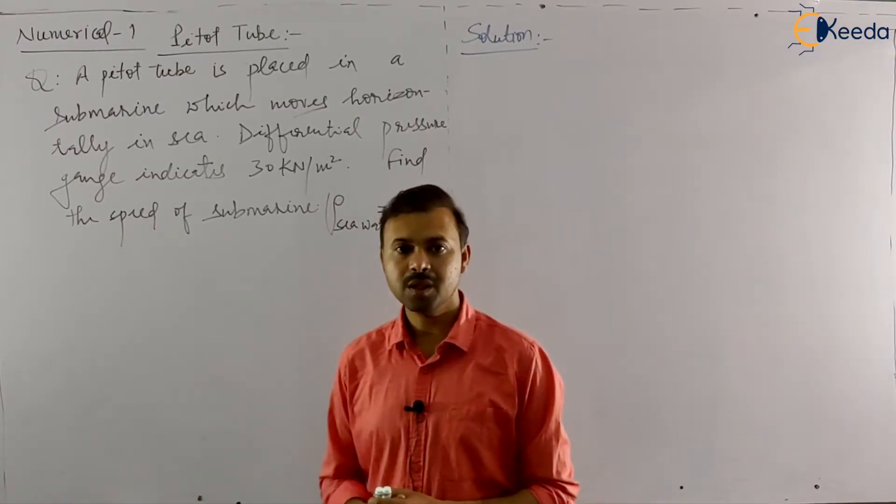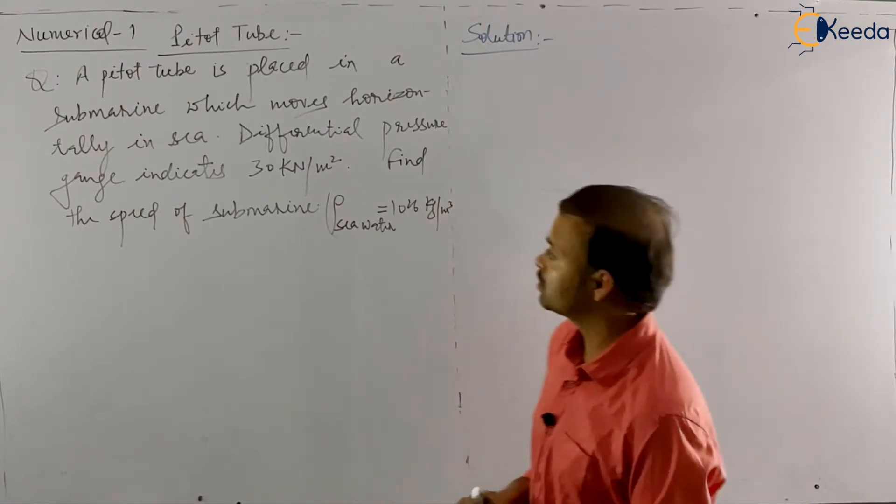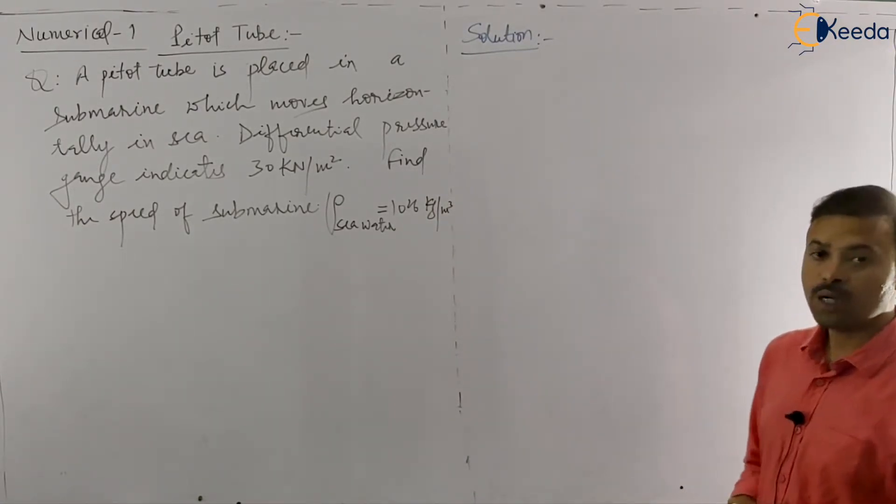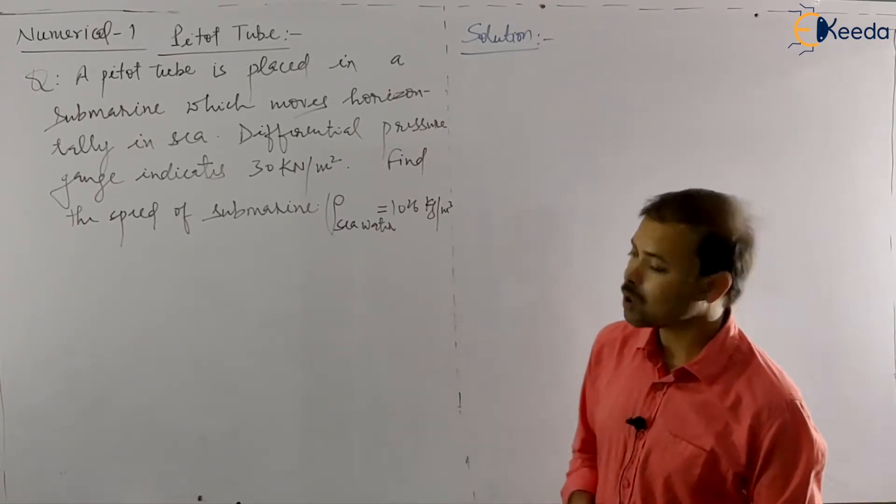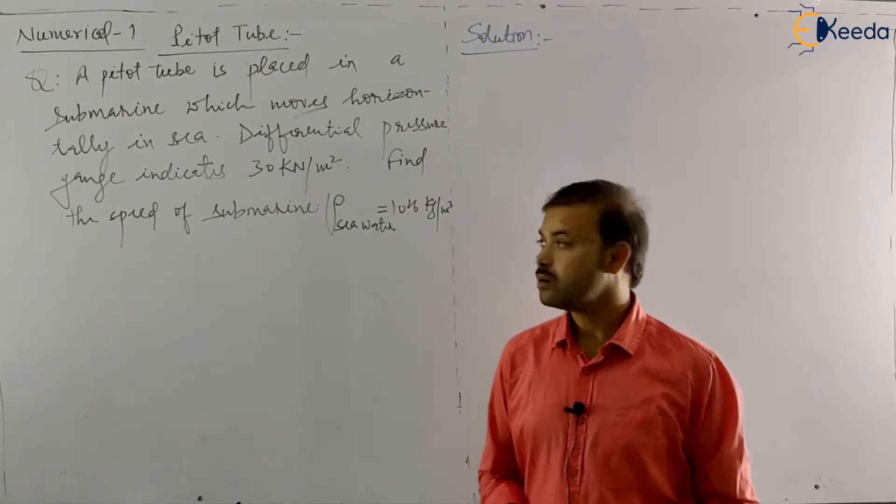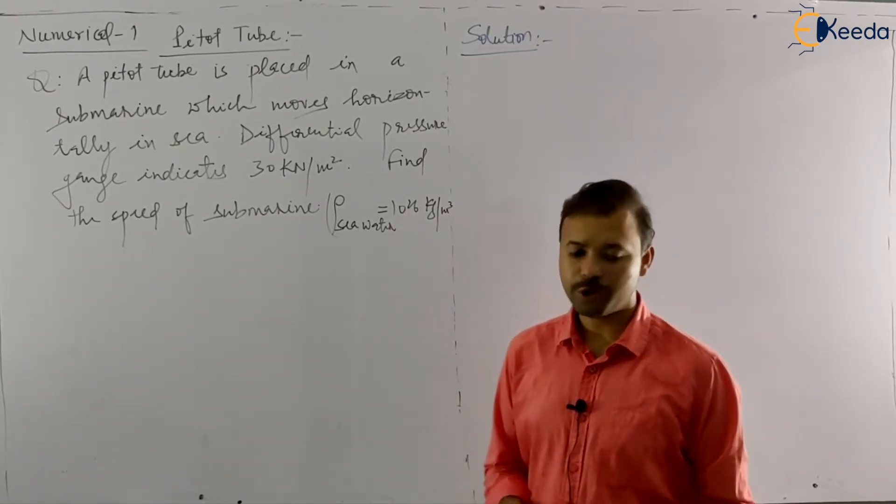You have to find the speed of the submarine to which the submarine is moving. In the theory part, we have studied about the Pitot tube and the flow rate through the Pitot tube V.